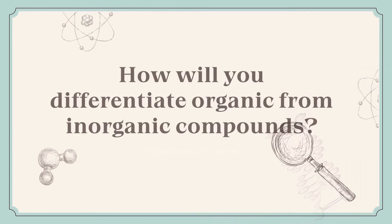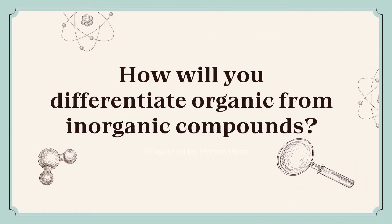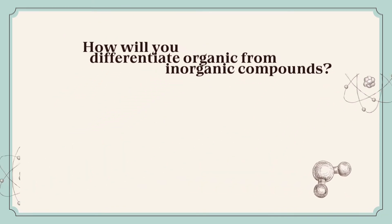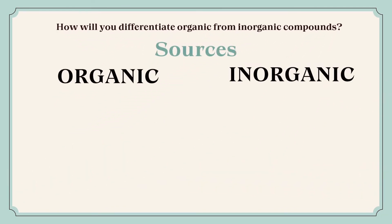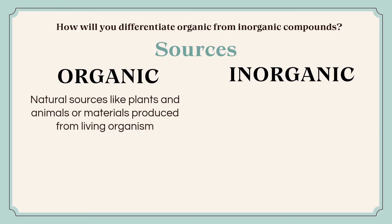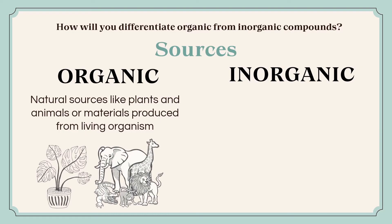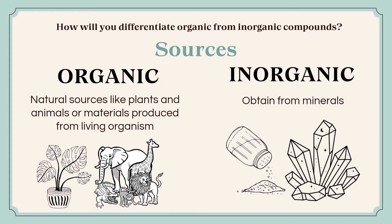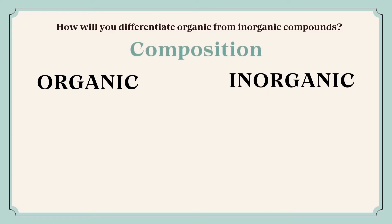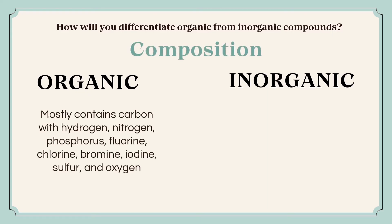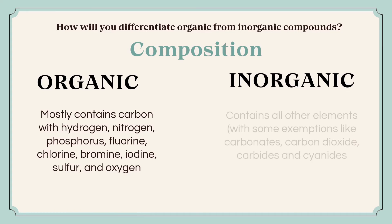Now, how will you differentiate organic from inorganic compounds? In terms of sources, organic compounds come from natural sources like plants and animals, or materials produced from living organisms. On the other hand, inorganic compounds are obtained from minerals. In terms of composition, organic compounds mostly contain carbon, with hydrogen, nitrogen, phosphorus, chlorine, bromine, iodine, sulfur, and oxygen.